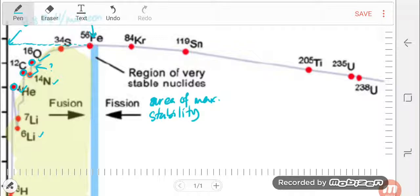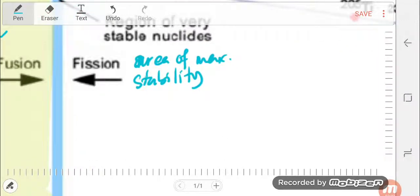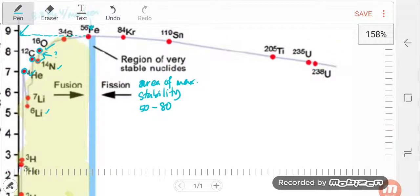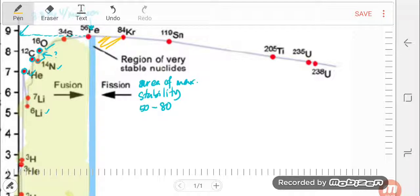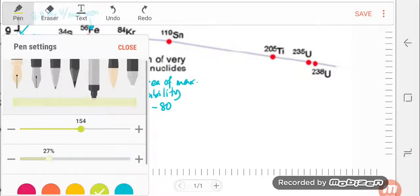So in this area, the mass number is around 50 to 80. Then let's go further to this area.